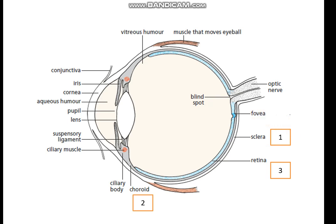Then we learned about the fovea, also known as the yellow spot, which contains the maximum number of rod and cone cells to produce a focused image. Then we learned about the blind spot, a point where there are no rod and cone cells present, so no image is formed if light rays fall on the blind spot. We also have optic nerves that carry nerve impulses to the visual center of the brain.